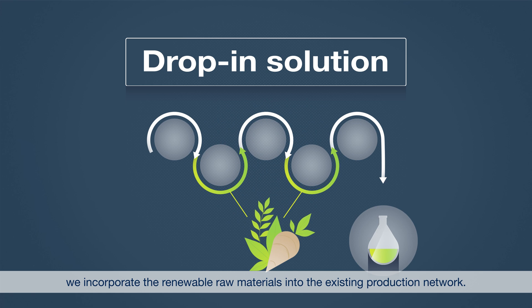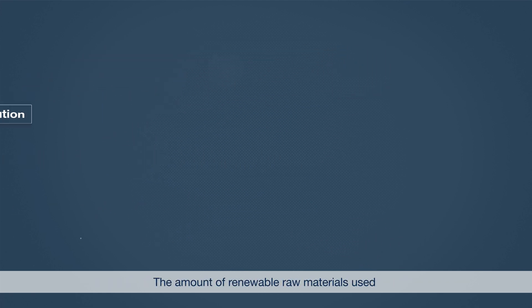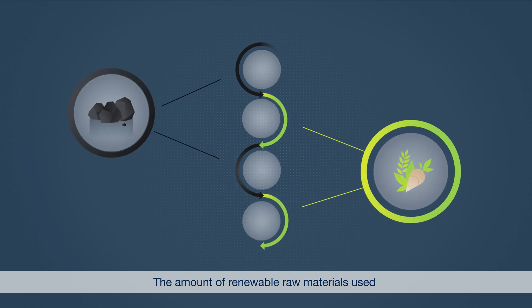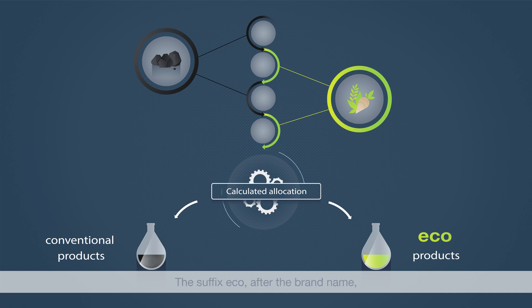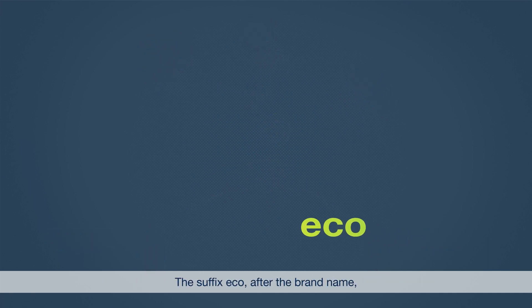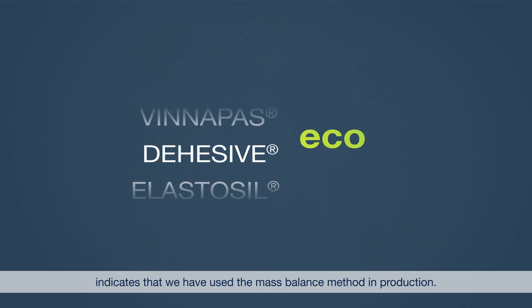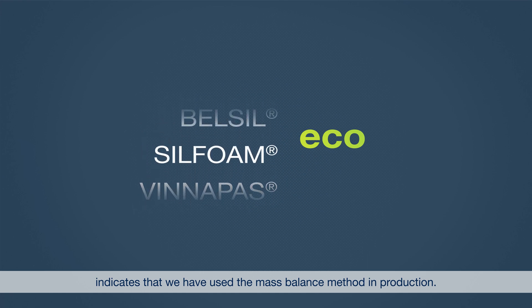The amount of renewable raw materials used corresponds arithmetically to the eco products produced from them. The suffix eco after the brand name indicates that we have used the mass balance method in production.